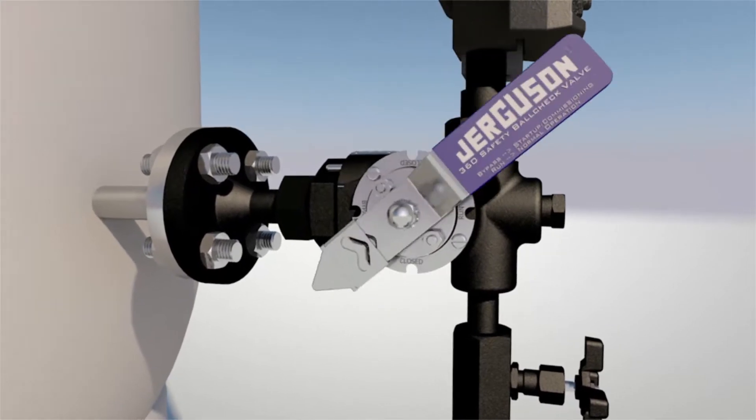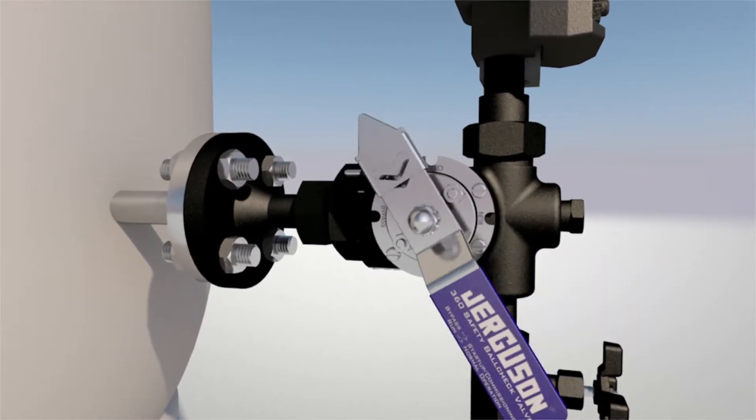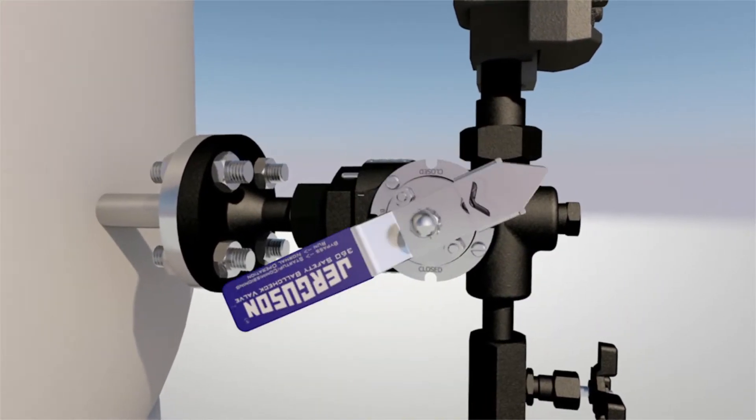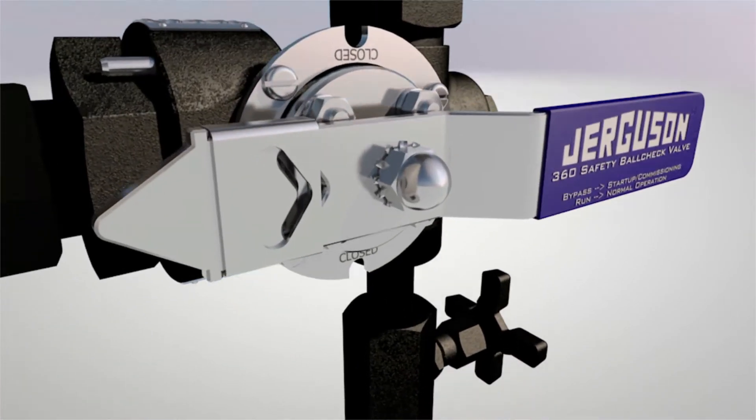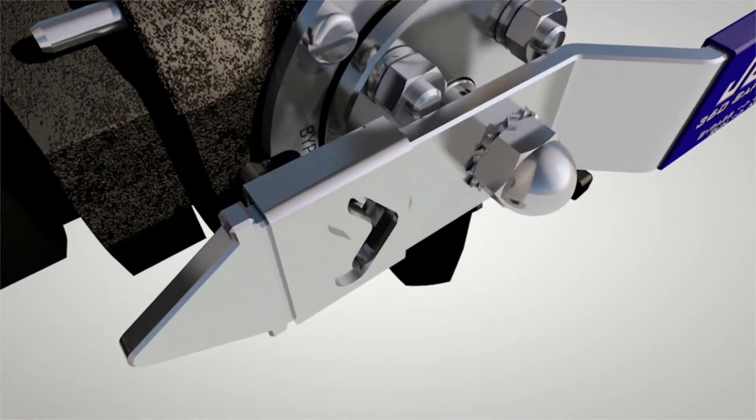The patented ball check design provides clear status with its quarter turn position visible handle. This unique handle design points to the mode of operation and is complete with locking pin to secure its position.